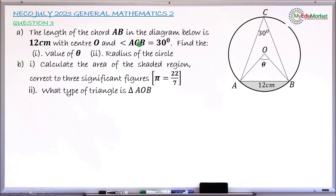Under question A, Roman numeral 1 asks you to find the value of theta — this angle at the center of the circle. Roman numeral 2 asks you to find the radius of the circle. Question B says calculate the area of the shaded region, which is this shaded segment.